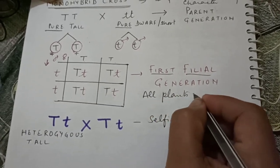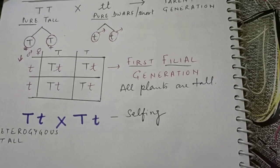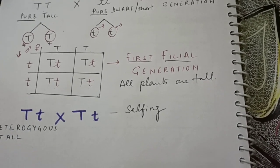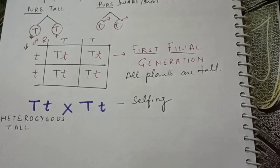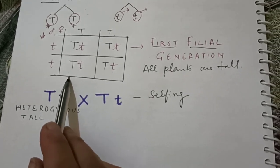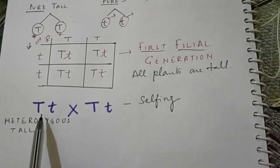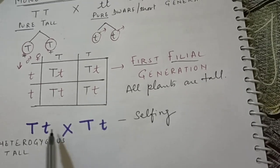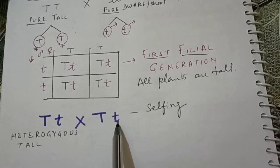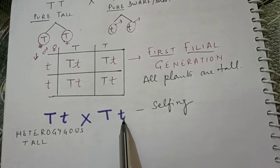Here the dwarf trait is not visible, means in F1 or first filial generation all plants are tall. One trait is missing, one allele is not able to show its own phenotypic appearance. Now for proving the law of segregation, we have taken two plants of this F1 generation, so I have written capital T small t and capital T small t. Here again we are talking about one character, that is height of the plant.